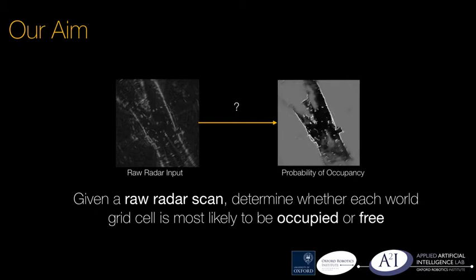However, distinguishing between occupied and free space from a raw radar scan is notoriously difficult. We consider the challenge of learning an inverse sensor model mapping a raw radar observation to a grid of occupancy probabilities.